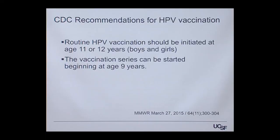The original trials were done in girls, but trials in boys were also conducted. The CDC recommends routine HPV vaccination initiated at age 11 or 12 for both boys and girls. That age is chosen because the vast majority of children have not yet initiated sexual activity, and the vaccine must be given before exposure to be effective. It does not help clear an existing infection.